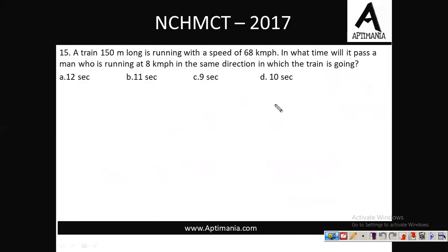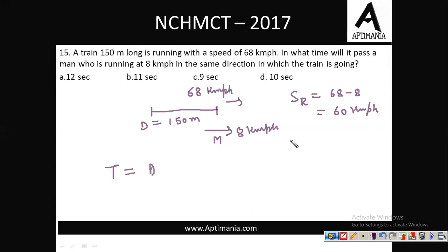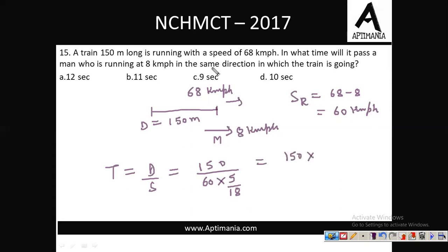Question number 15: A train 150 meters long is running at 68 km/h. In what time will it pass a man running at 8 km/h in the same direction? When both move in the same direction, relative speed = 68 − 8 = 60 km/h. Converting to m/s: 60 × 5/18 = 50/3 m/s. Time = distance/speed = 150 ÷ (50/3) = 150 × 18/(60 × 5) = 9 seconds. Option C is the correct answer.